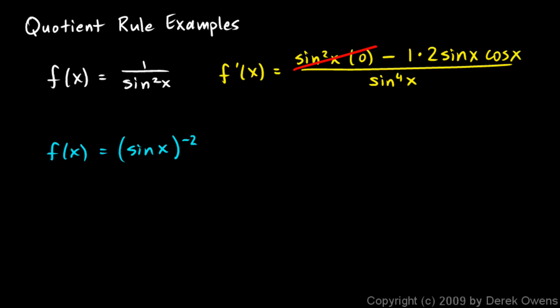And then we can simply solve it as a power rule problem and a chain rule. So f prime of x is going to be negative 2 times the sine of x to the negative 3 times the derivative of my inner function, which would be cosine x. And there you're done, and that's really fast. And you could see that that's negative 2 cosine x over sine cubed x, which is one of the answers we had earlier.